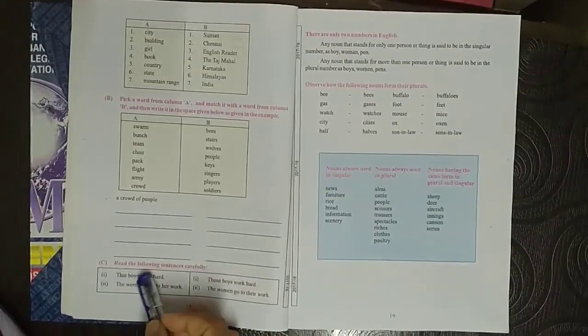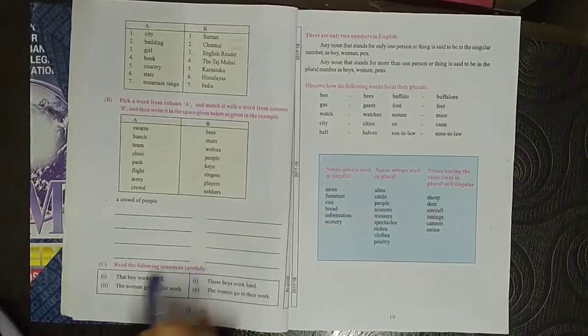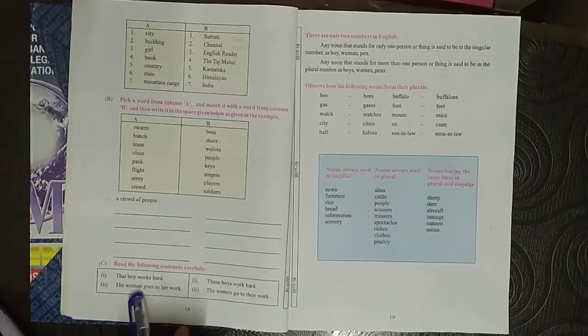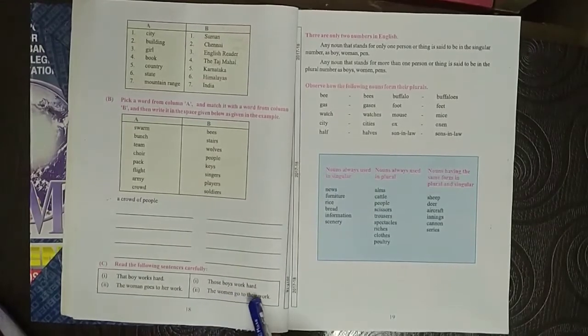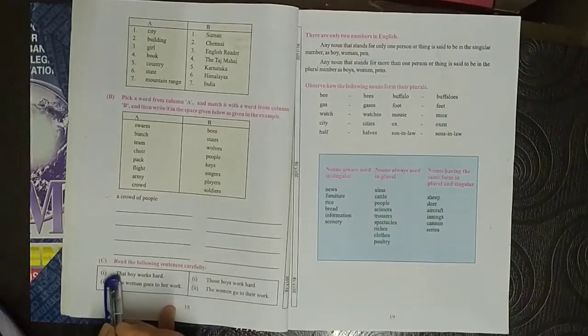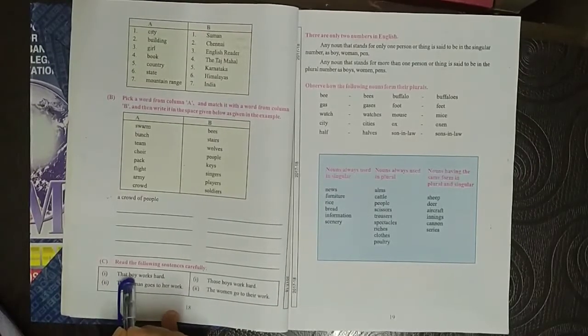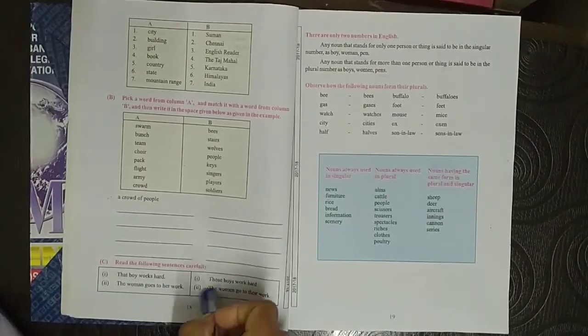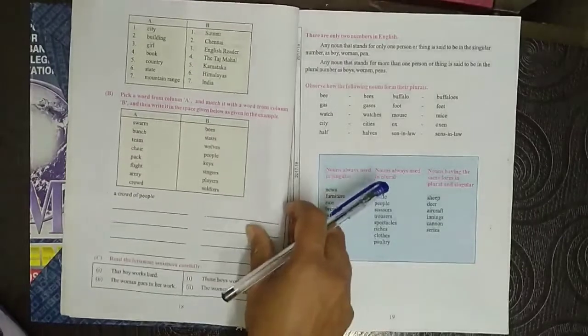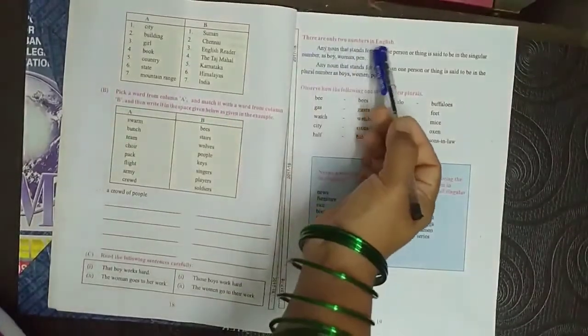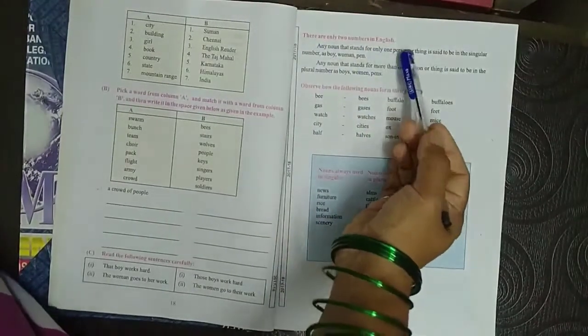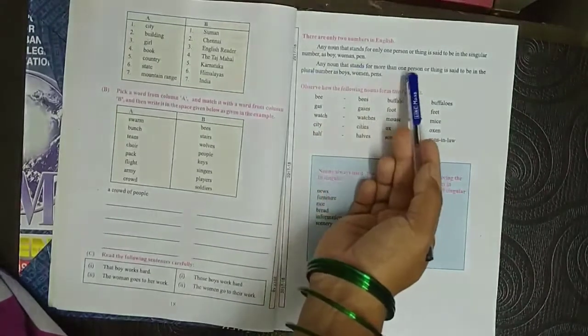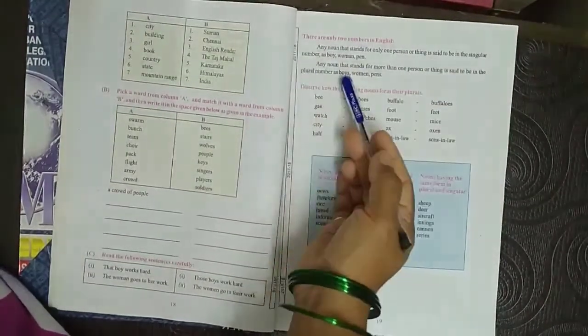Now in C, read the following sentences carefully: that boy works hard, those boys work hard. The woman goes to her work, the women go to their work. So here you find the difference. Here it talks about that boy, and here those boys means it talks about the numbers of noun. So here there are only two numbers in English. Any noun that stands for only one person or thing is said to be singular noun, and any noun that stands for more than one person or thing is called plural.